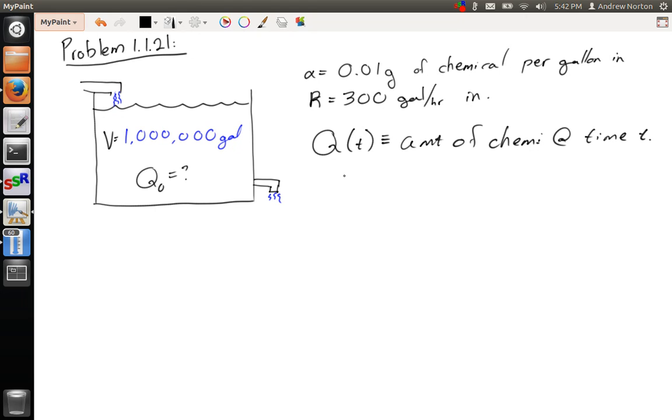So now what we're going to do is we're going to consider a differential equation. This differential equation is going to be q prime of t is equal to something. And we're going to say, q prime is just the change in quantity of the chemical. So the change in quantity will be chemical in minus chemical out at a given time t.